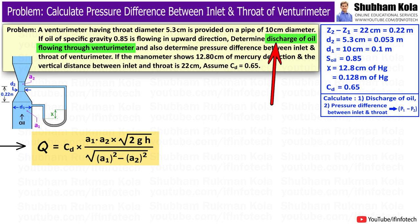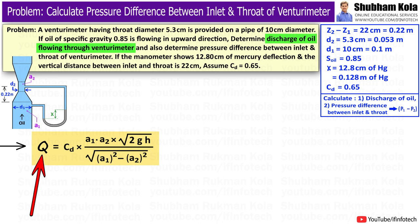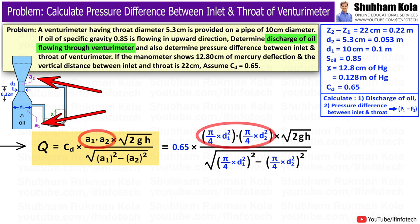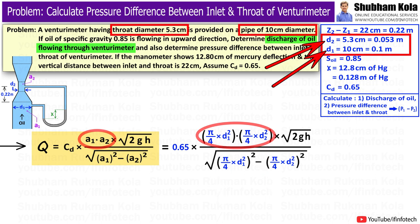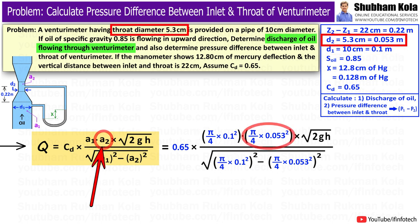We want to calculate the discharge of oil flowing through the Venturimeter using the discharge formula derived previously. In this formula, CD is 0.65. A1 and A2 are the cross-sectional areas at the inlet and throat sections. We know area equals pi over 4 times diameter squared. So A1 equals pi/4 times d1 squared, i.e. 0.1 squared, and A2 equals pi/4 times d2 squared, i.e. 0.053 squared.